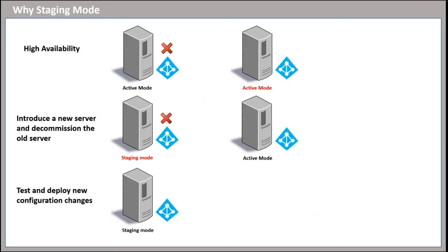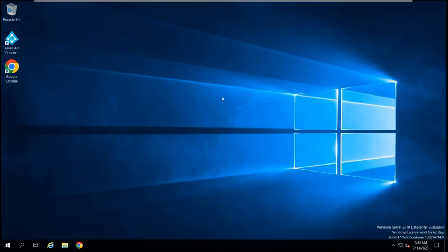The third requirement for a staging mode Azure AD Connect server can be when you want to use Azure AD Connect for testing purposes before you start exporting changes to Azure Active Directory. Once you make sure Azure AD Connect is configured as per business requirements and working as expected, you can convert staging mode to active mode.